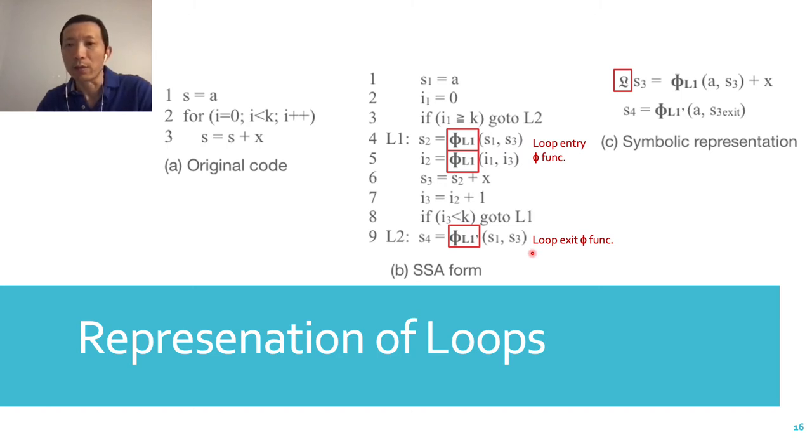To get the symbolic representation for these two examples, we introduce a new notation, theta_L. So this line says that this assignment is enclosed in the loop. With that, we get this symbolic representation for the computation of S.